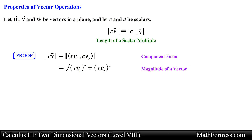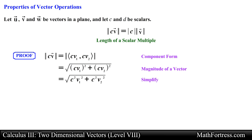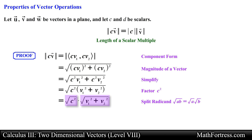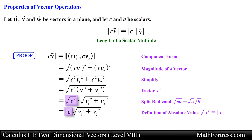Next we find the magnitude of this vector by applying the Pythagorean Theorem — squaring both the x component and y component of the vector. Then we factor out the c squared term and break apart the product in the radicand. Recall that the square root of a quantity squared is by definition the absolute value of that quantity, so we rewrite this radical as the absolute value of c. The remaining radical expression is the definition of the magnitude of vector v, so we have shown that the left hand side equals the right hand side, and this ends the proof.